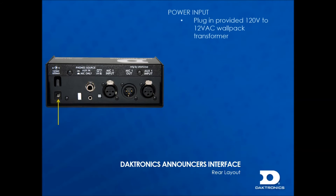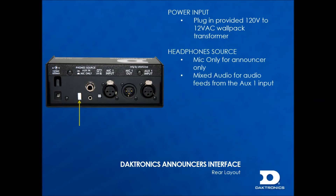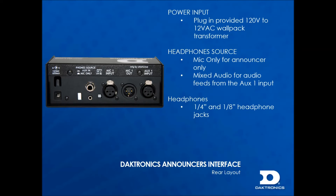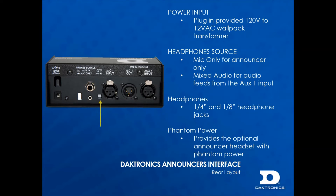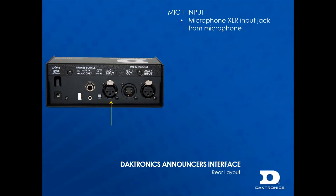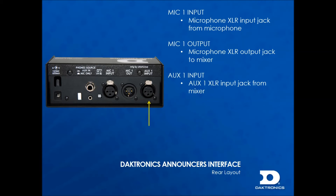On the rear of the interface box is a power input jack. There is a phone source switch which selects the audio routed to the headphones between the aux-in feed from the mixer or the announcer's microphone only. Two headphone jacks are supplied, one for quarter inch and one for eighth inch, allowing for the included headphones or various headphone options. The small gray button is the phantom power button, which supplies 48 volts to the mic one input for use with condenser microphones like the optional announcer headset. The mic one input jack is the microphone input from the announcer microphone, and the mic one output is the output of the announcer to the mixer. The aux-1 jack is an audio input used to listen to various audio feeds through the headphones.